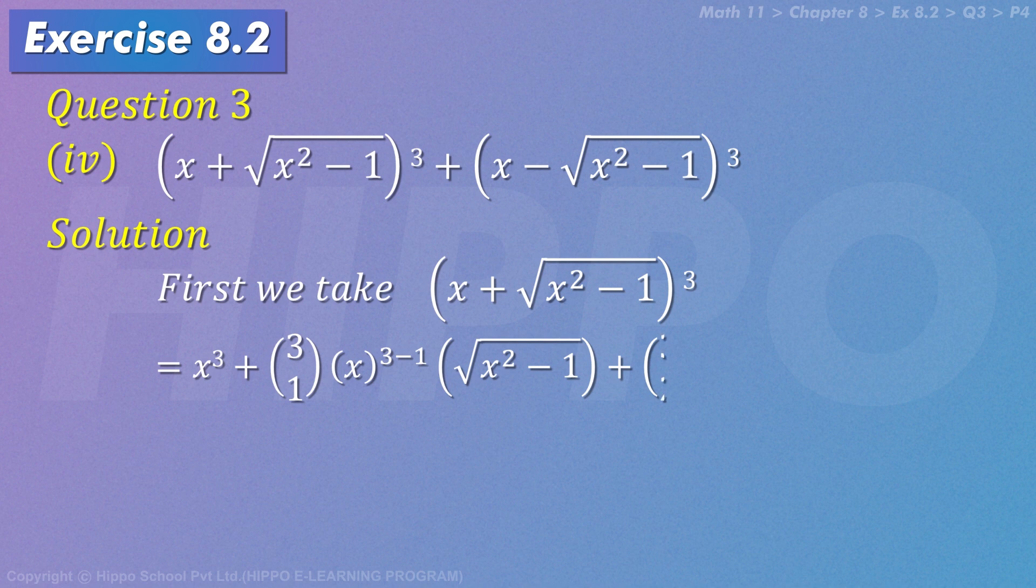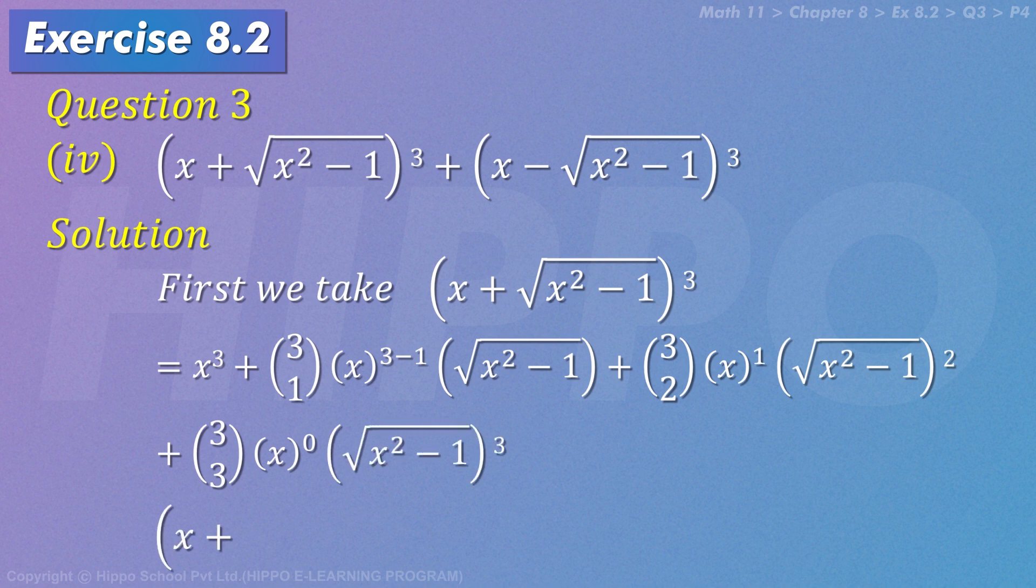Plus ³C₂ x¹ (√(x² - 1))² plus ³C₃ x⁰ (√(x² - 1))³. So (x + √(x² - 1))³ equals x³ plus ³C₁, answer 3, x² √(x² - 1).